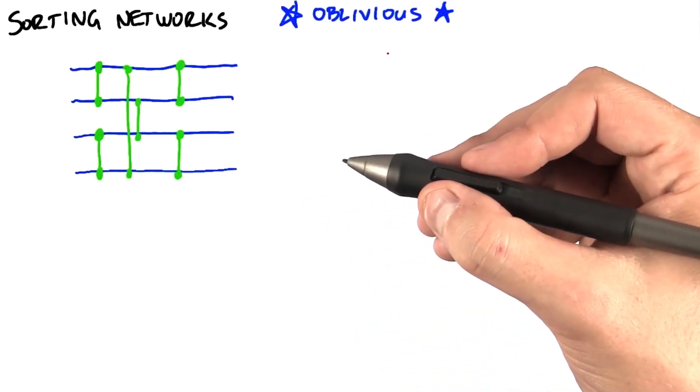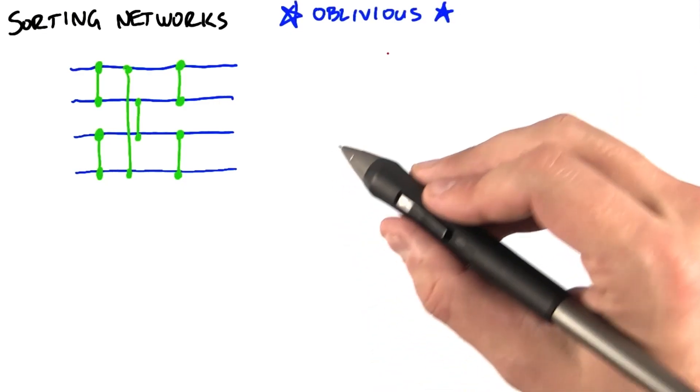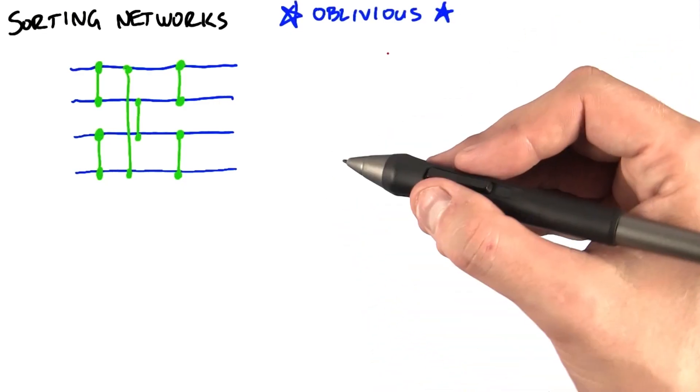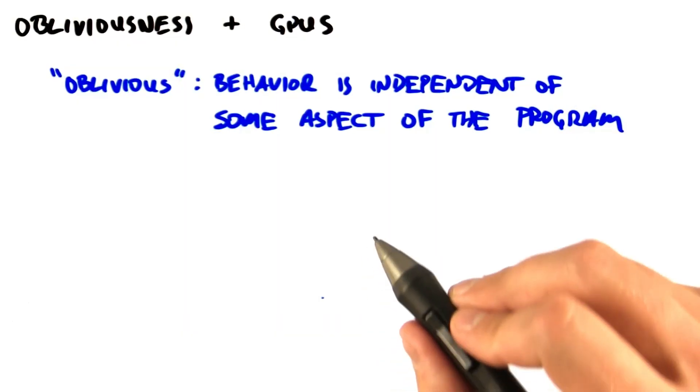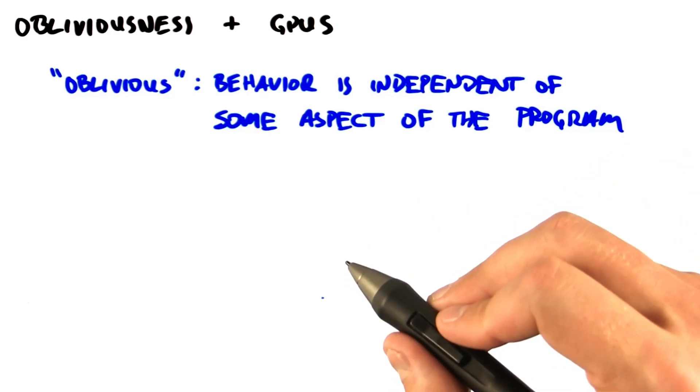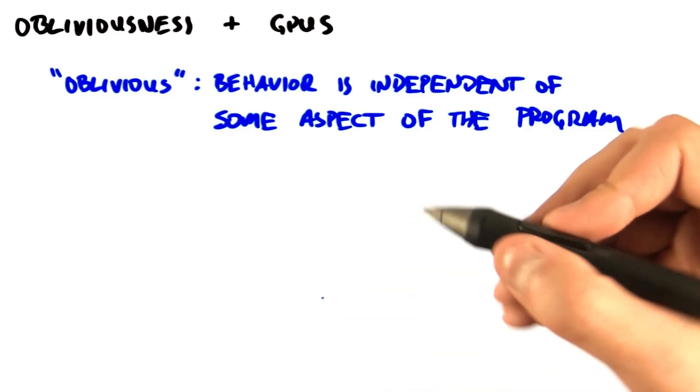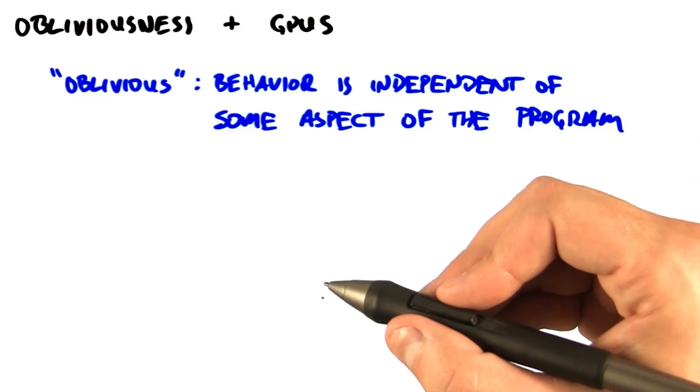In fact, the only data dependence we will have in the whole algorithm is a swap operation that inputs two elements and outputs them in the correct order. Let me take a brief digression. Why is an Oblivious algorithm a good algorithm for a parallel processor like a GPU? When I talk about an Oblivious algorithm, what I mean is that its behavior is independent of some particular aspect of the problem.